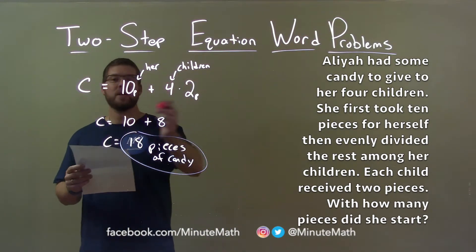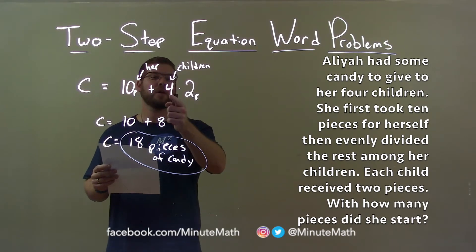With that information, I created C equals 10 pieces for her plus four times two.